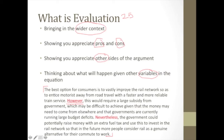The point is that the best option is to improve the rail network, but there are other variables and other sides of the argument to consider. So in the evaluation: 'However, this would require a large subsidy from the government, which may be difficult to achieve' — appreciating it's not simple, as the money may need to come from elsewhere, a clear con. 'And governments are currently running large budget deficits' — the wider context. 'Nevertheless' — another key evaluative phrase — 'the government could potentially raise money with an extra fuel tax and use this to invest in the rail network, so that in the future more people consider rail as a genuine alternative for their commute to work.'